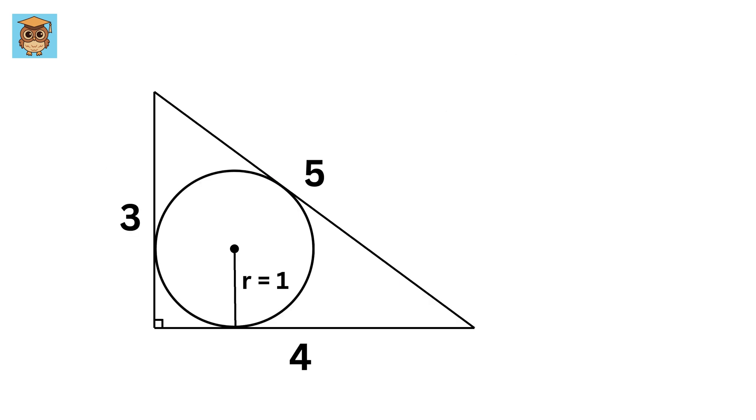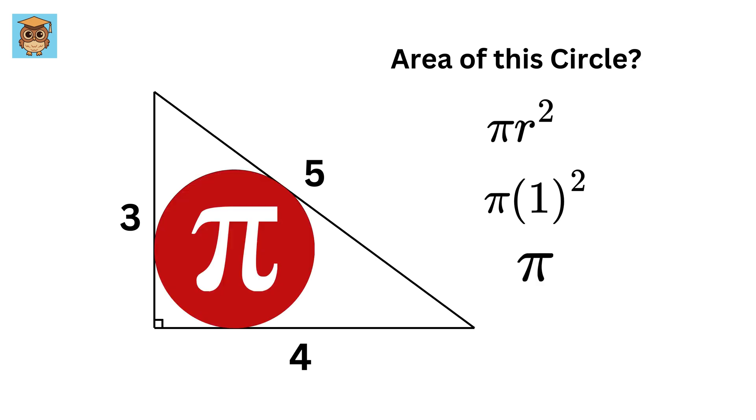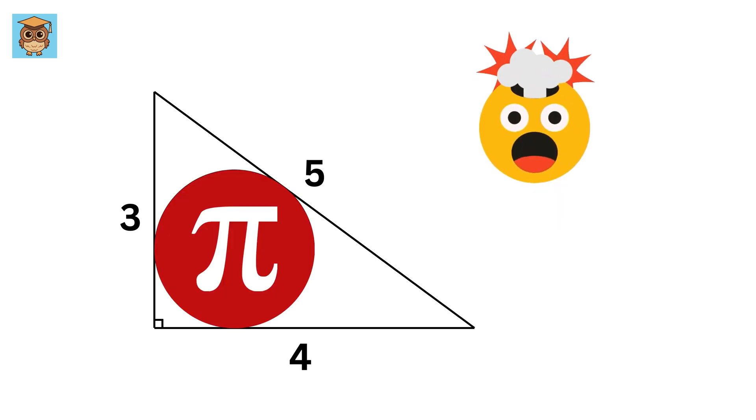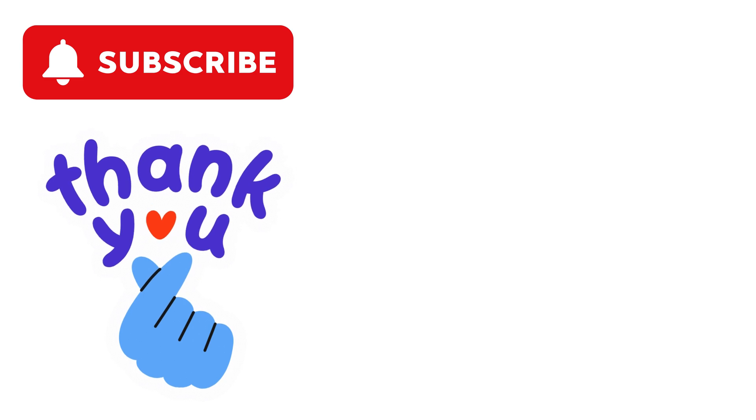Now that we have the radius of the circle as 1, what will be the area of this circle? It will be π times r squared, and putting r as 1, we get the area of this circle as π. Isn't this cool? Thank you.